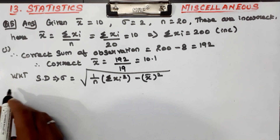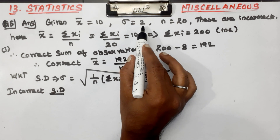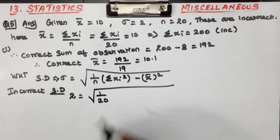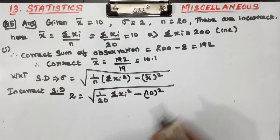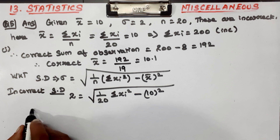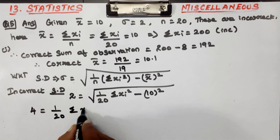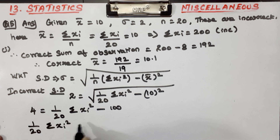Now we will find the incorrect standard deviation. Incorrect standard deviation is equal to 2. So: 2 = square root of (1/n × summation xi² − x-bar²). Here x-bar is 10, so 10² = 100. Therefore: 1/20 × summation xi² minus 100.